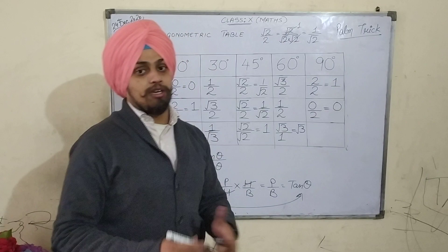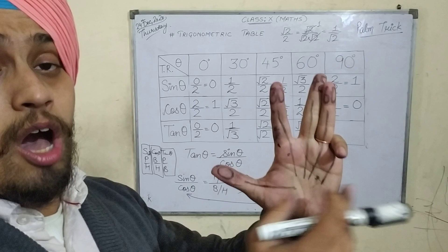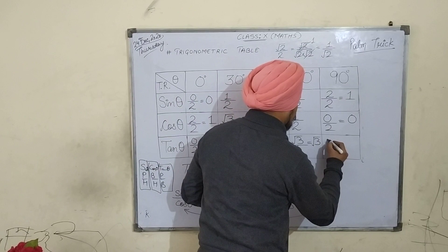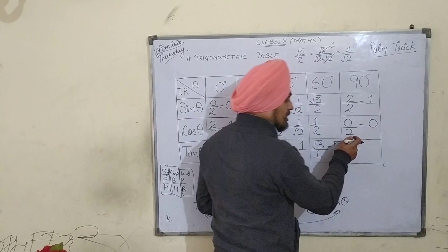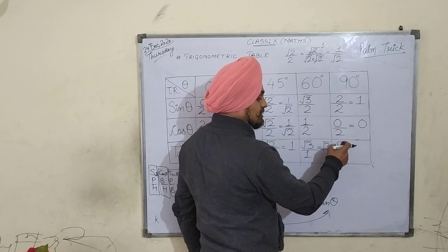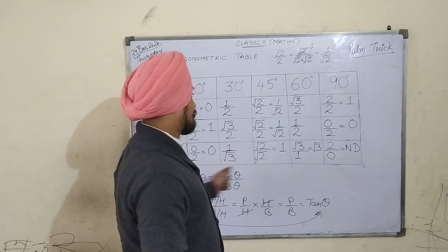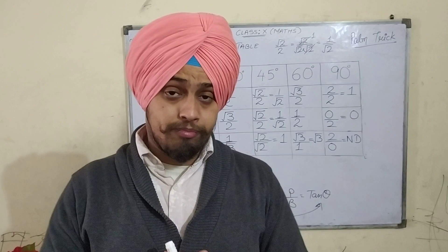Finally, the value of tan 90 degree. For 90 degree, bend this finger. See how many fingers are to the left of it — 4 fingers. Take the square root of 4, that is 2. Now see how many fingers are to the right of it — 0 fingers. Square root of 0 is 0. And anything — any non-zero number — divided by 0 is not defined. So the value of tan 90 degree is not defined.